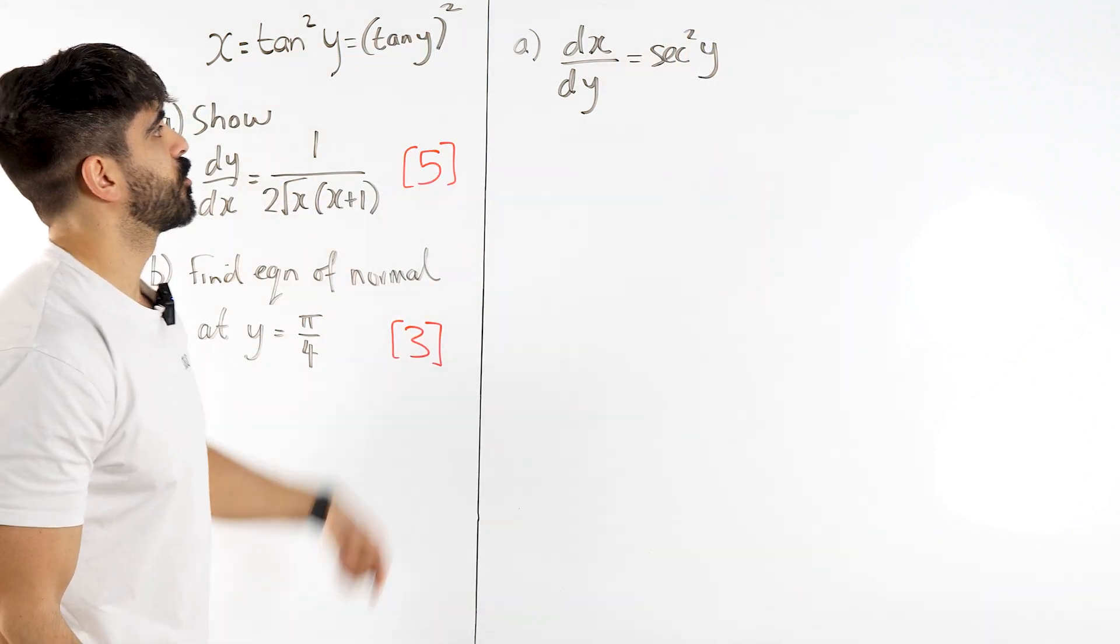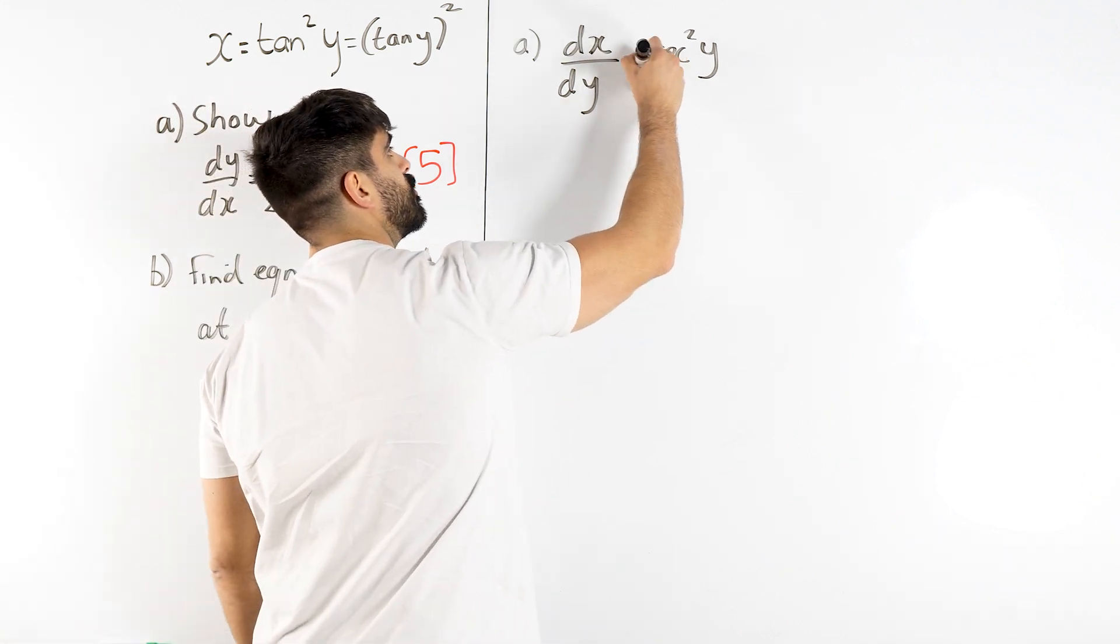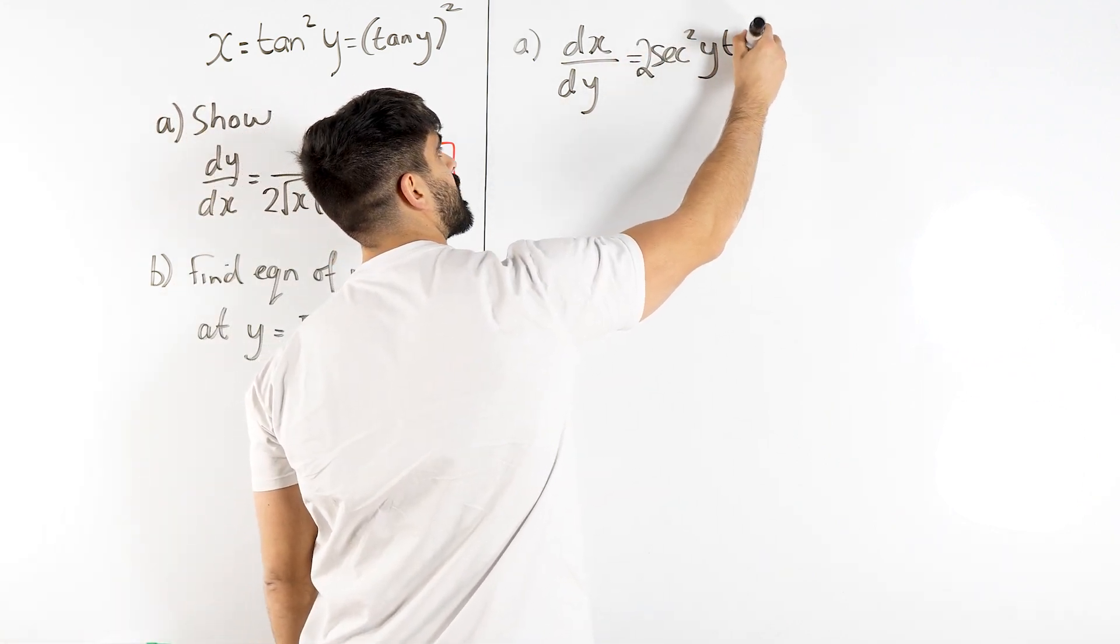Tan y differentiates to sec squared y. Then we bring down the power, knock 1 off the power, so bring down the 2 and then knock 1 off the power would be tan y.